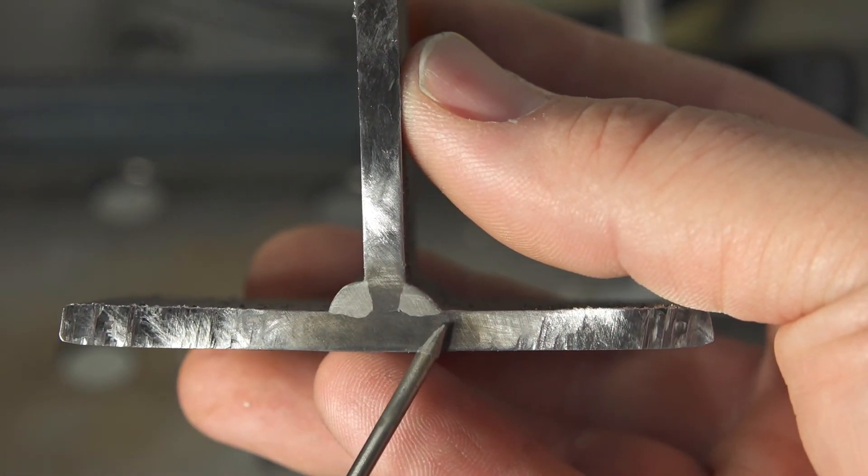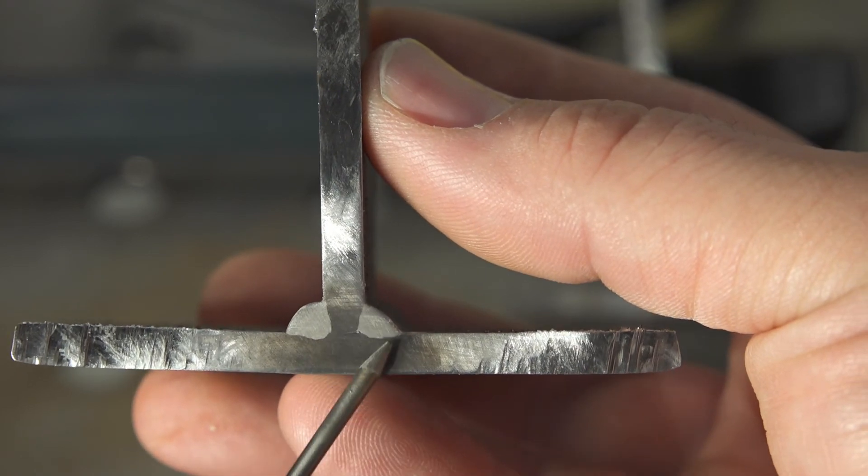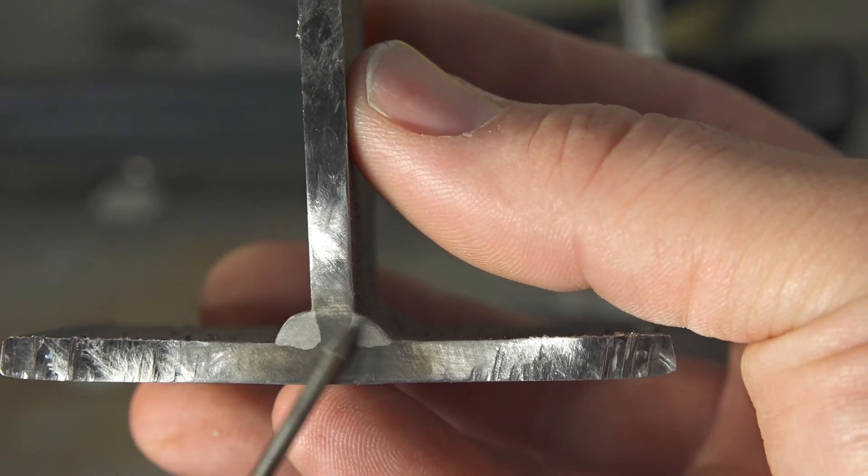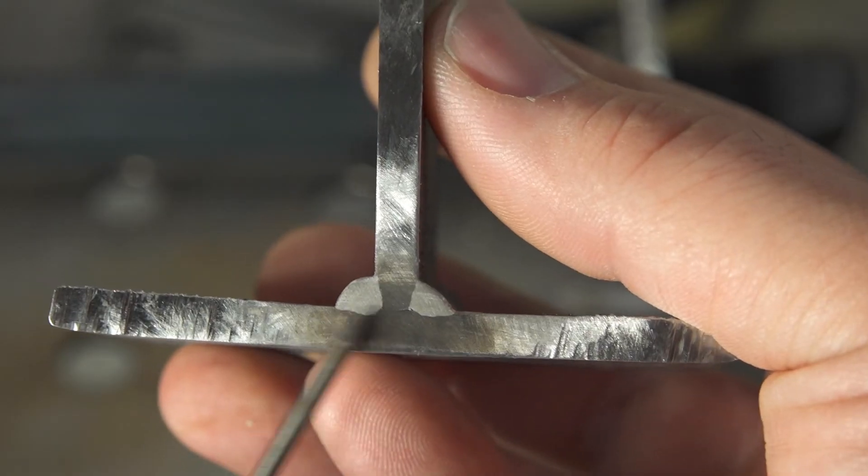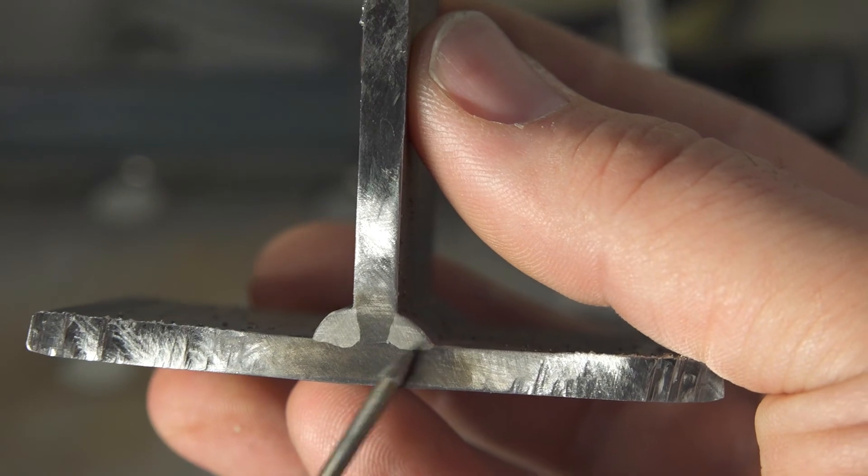After installing the rectifier and converting to DC you can see a pretty different story. Now this was with the welder maxed out and this was with it turned down just a little bit to get a little bit smoother arc and a little bit flatter bead.